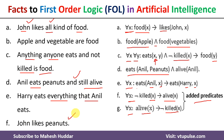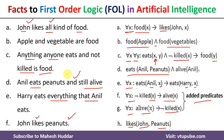The final statement is what we need to prove: John likes peanuts. Using the likes function with John as the person and peanuts as the object, we write likes(John, Peanuts). This is how we convert all the given facts into first order logic.